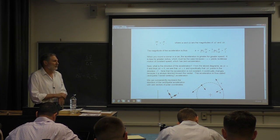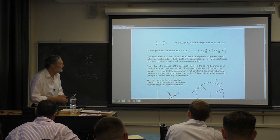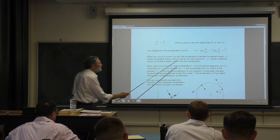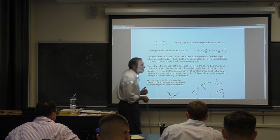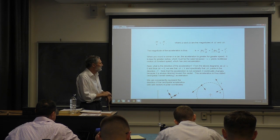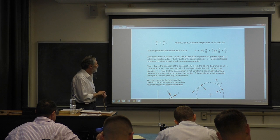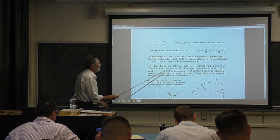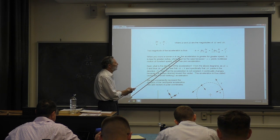You won't forget this because we're going to use it so much in this course. This is the magnitude of the acceleration for uniform circular motion. Now before we get the direction, let's point something out. When you're rounding a corner, uniform circular motion is an approximate model — you're not necessarily going at constant speed.